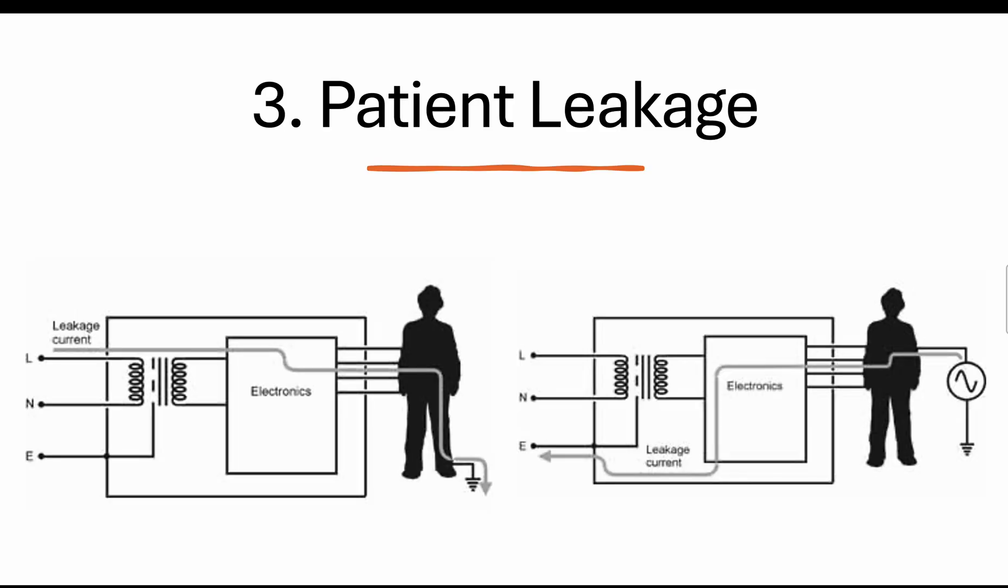Next is patient leakage current. This current is flowing through the patient in a medical setting. This is often related to medical equipment and can happen if the equipment is not well isolated. This specific type of leakage current is leakage that flows through the patient when connected to an applied part, so it could be a finger pulse oximeter or an ECG.